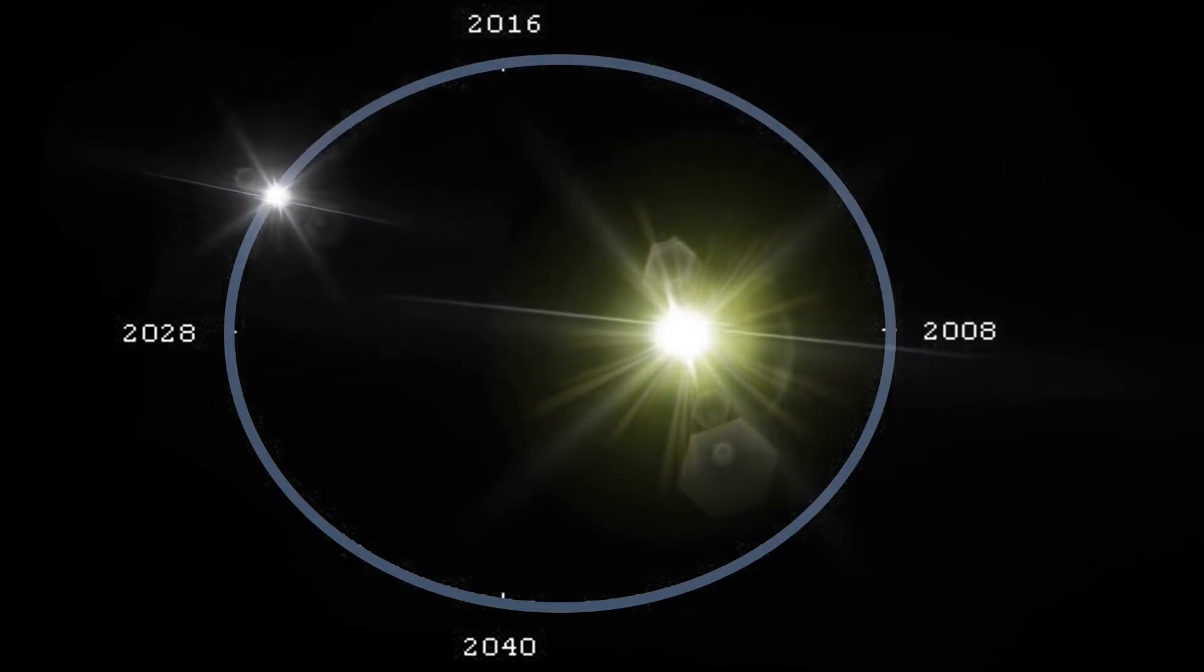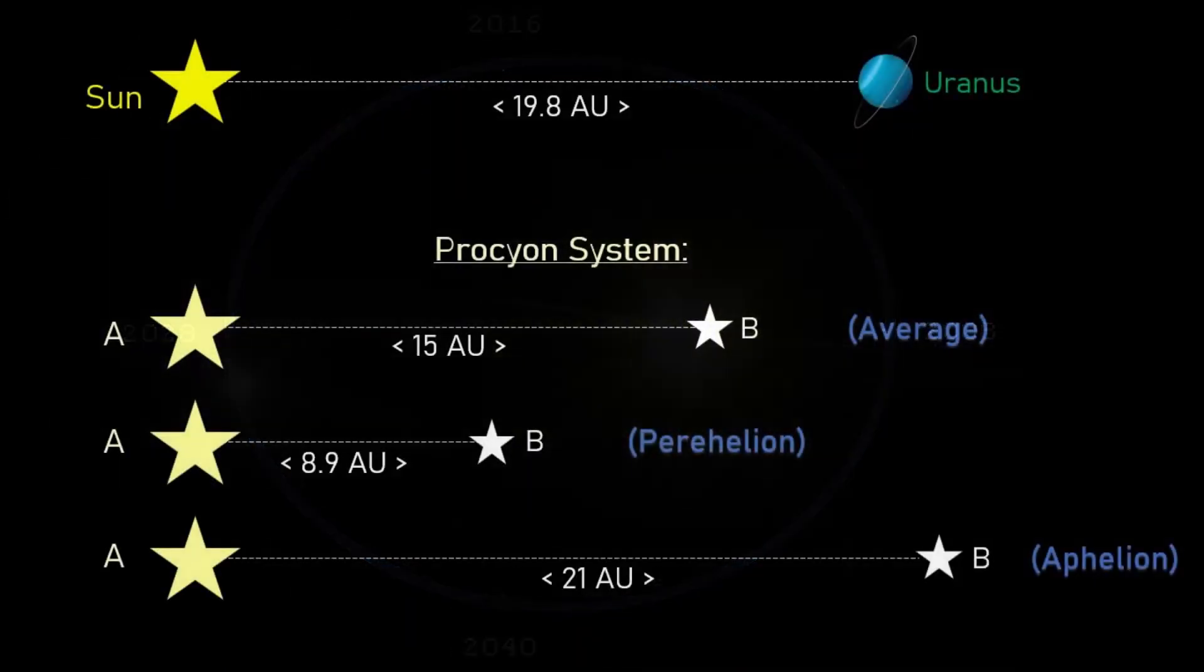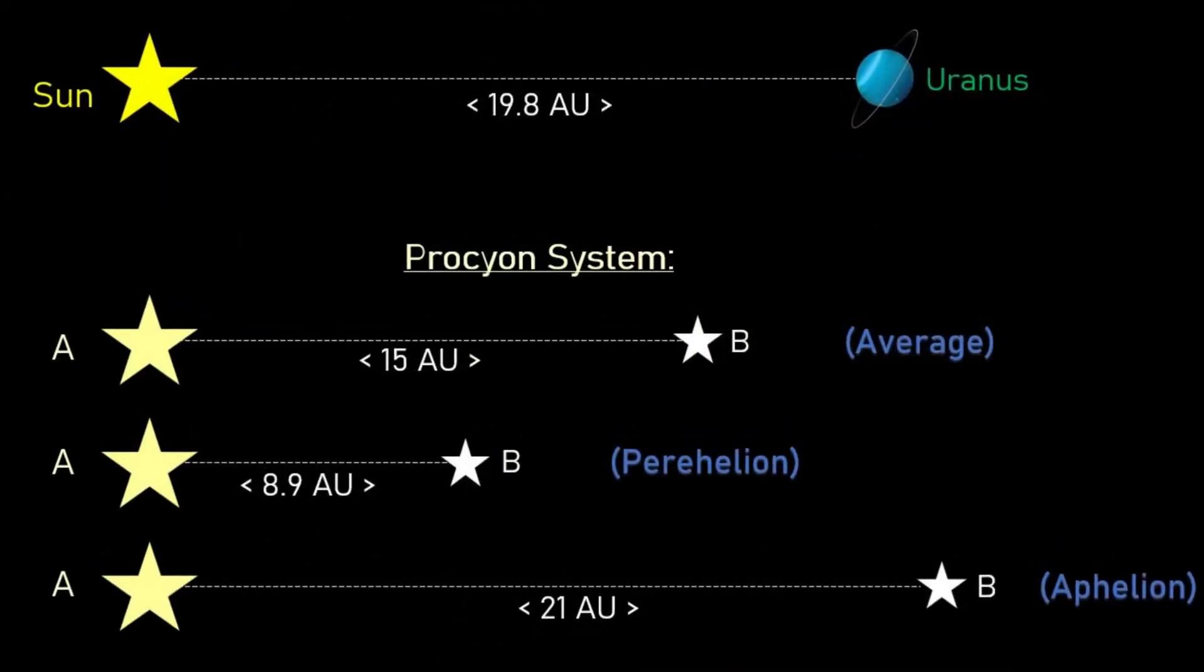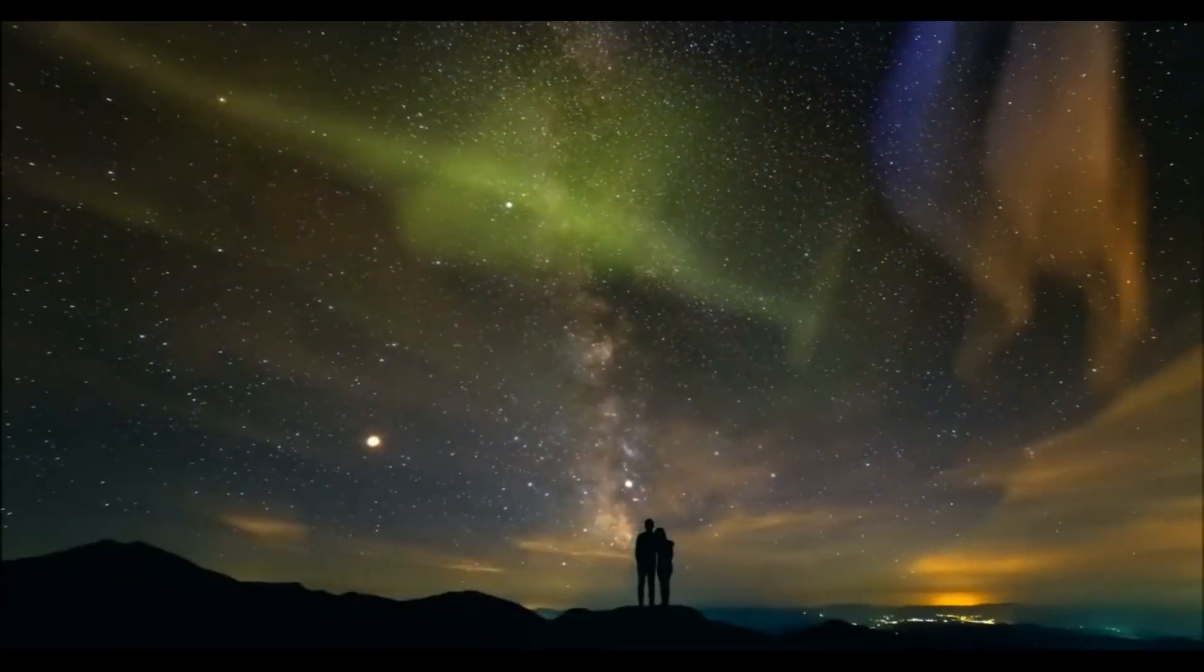The average separation between these two components is 15 astronomical units, which works out to a little less than the distance between Uranus and the sun, though the eccentric orbit means that it carries them as close as 8.9 astronomical units and as far as 21.